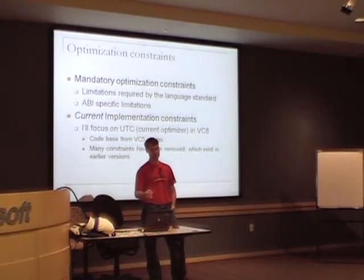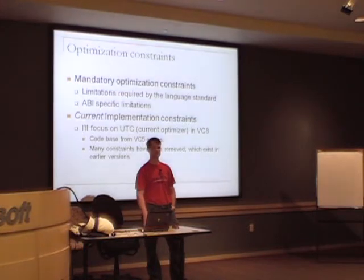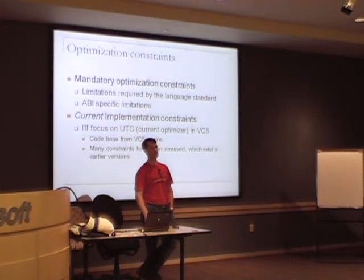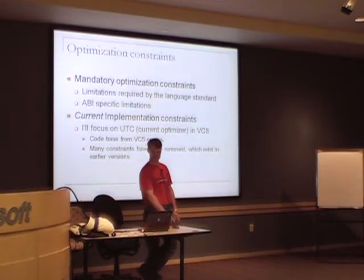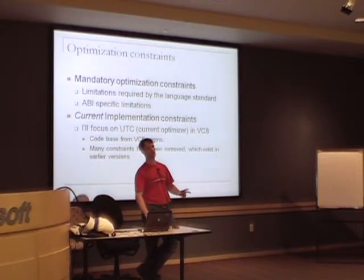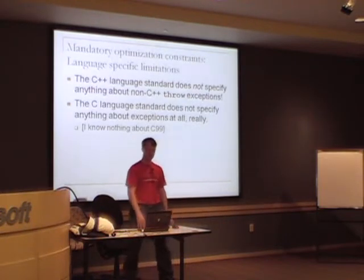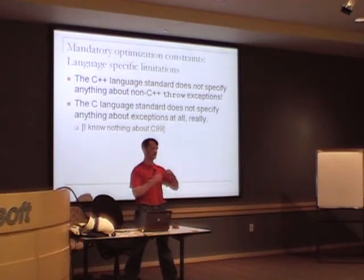I'll also talk about optimization constraints in the current compiler. VC8 — Visual Studio 2005 — has been migrated from the VC5 code base. In VC8, we did a lot of work to reduce the cost of exception handling and fixed a lot of holes. The code I'll show you is VC8 code. The C++ language standard doesn't actually specify anything about non-thrown exceptions — if you don't see the expression 'throw', there's nothing in the language standard about it.